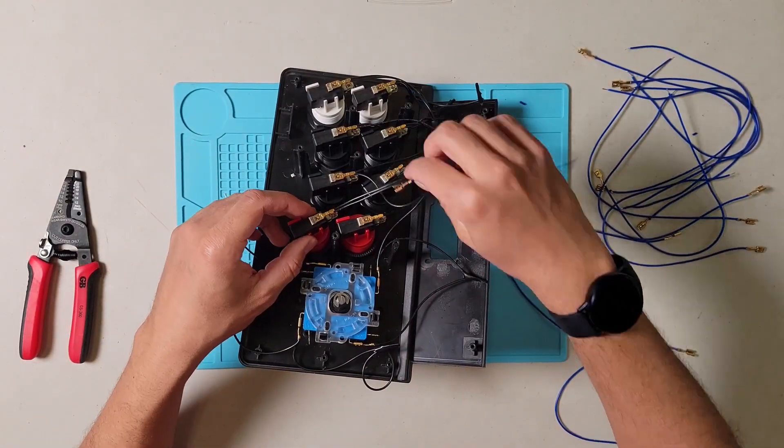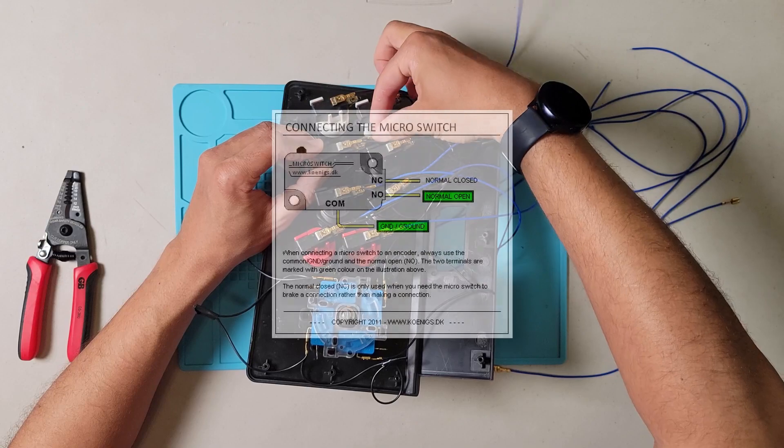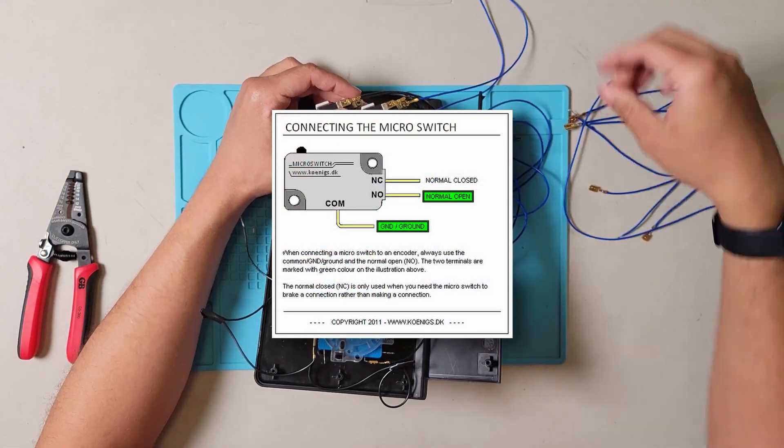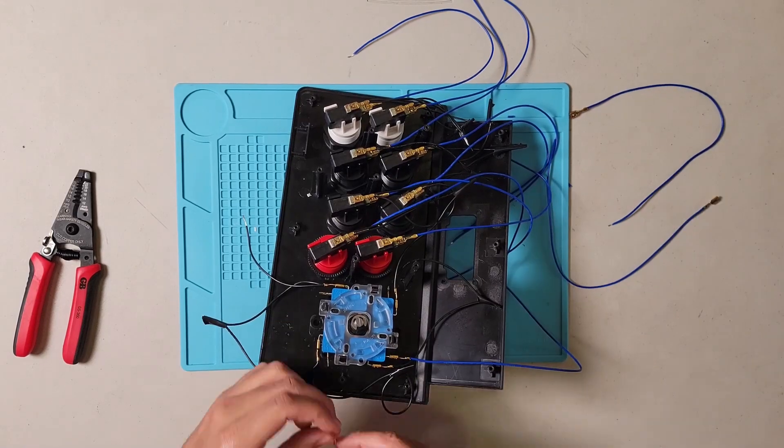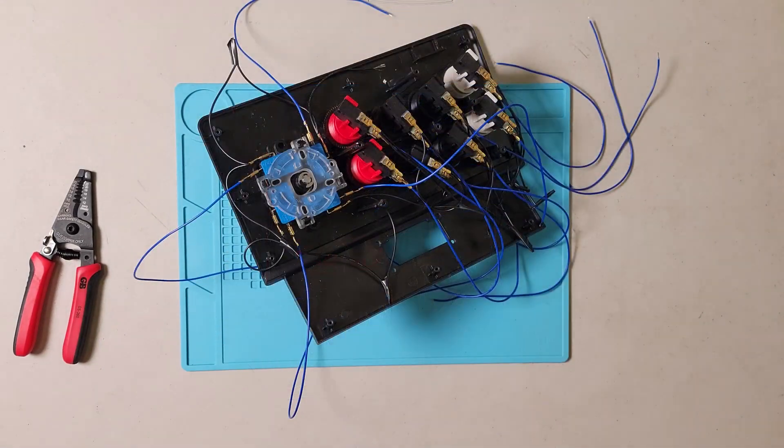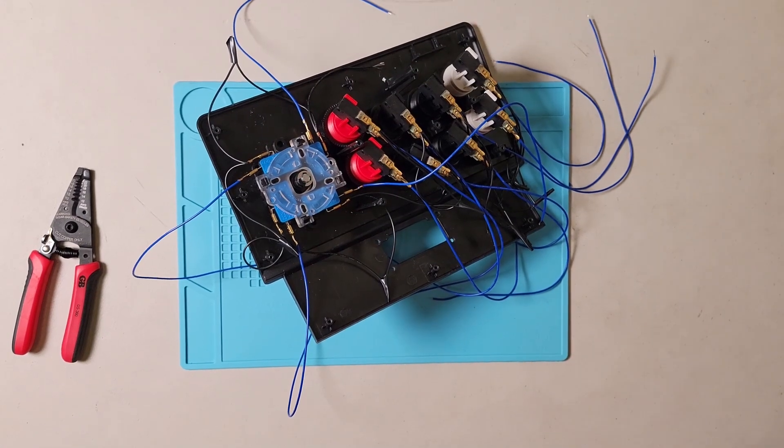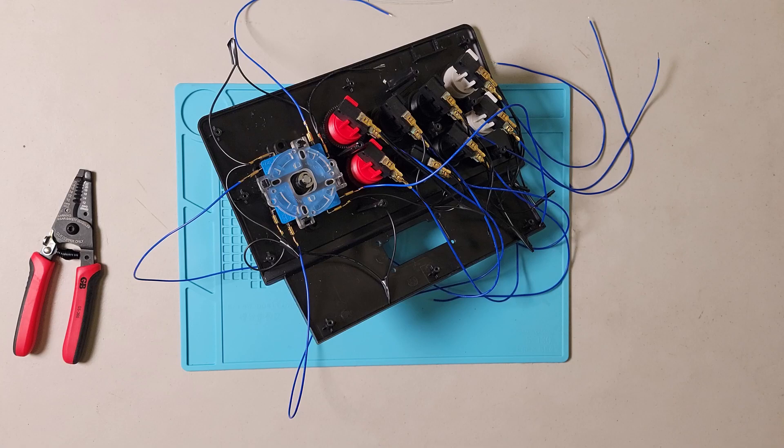So after stripping all the normally open wires, the next step is to plug them into the controller. I'll refer to the image I showed earlier to remember which connector they go into. Once I have all those plugged in, it will be time to attach all the cables to the DB15 adapter and I'll be super close to actually finishing the controller.